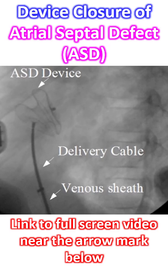It is ideal to have TEE guidance during the procedure as well. A guidewire is introduced through the femoral vein into the inferior vena cava and further through the right atrium, across the ASD into the left atrium. The tip of the wire is then placed in the pulmonary vein and a long venous sheath is introduced.